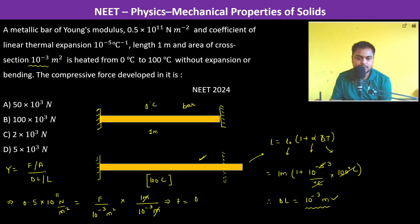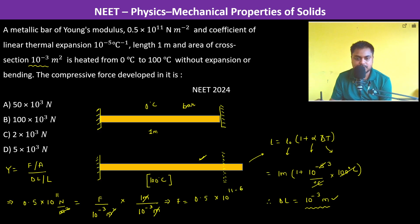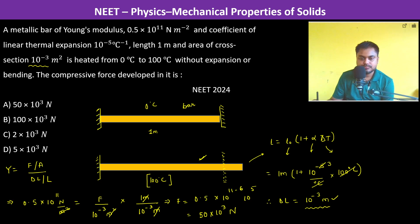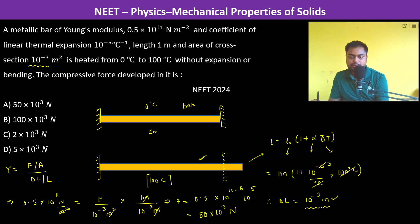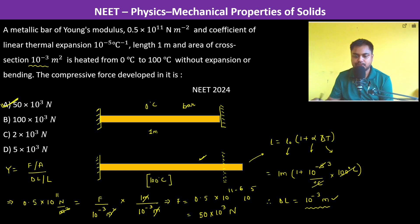F = 0.5 × 10¹¹ × 10⁻⁶ = 0.5 × 10⁵ = 50 × 10³ newtons, which is 5 × 10⁴ newtons. So the answer is 5 × 10⁴ N. Thank you.